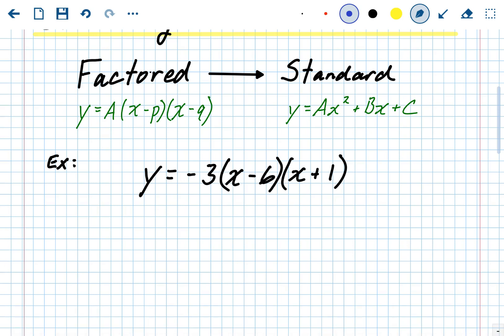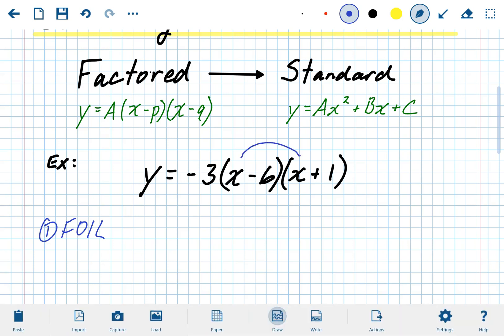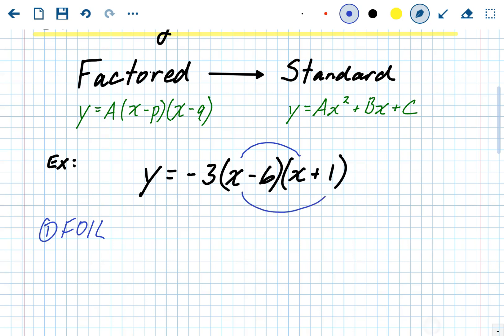So let's do that. Start with FOIL. So this one, I got Y equals negative 3 times X minus 6 times X plus 1, binomial times binomial. So we'll do the first, the outside, the inside, and the last.